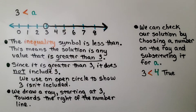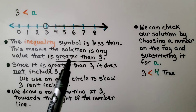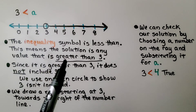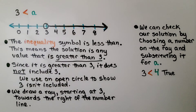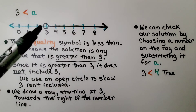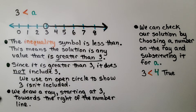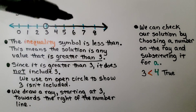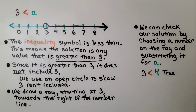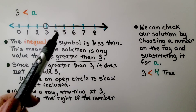For this inequality, we have 3 is less than a. It's less than, which means the solution is any value greater than 3. Since it's greater than 3, it does not include 3 — we use an open circle to show 3 is not included. We draw a ray starting at 3 towards the right of the number line going to the greater numbers. We can check our solution by choosing a number on the ray, so we could choose 4, and 3 is less than 4 — that's true, so 4 is a solution.